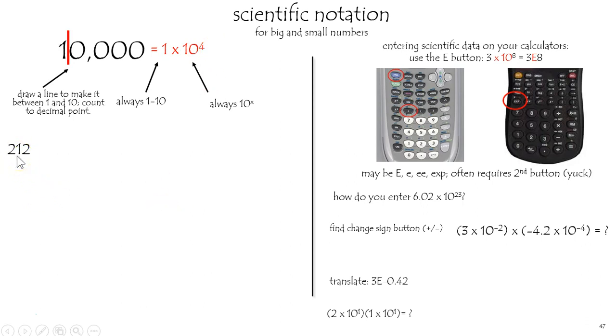Let's take 212 and turn it into scientific notation. 2.12 should be between 1 and 10. That's our line right there. And there's two numbers, placeholders to the decimal place. Therefore, 2.12 times 10 to the 2.